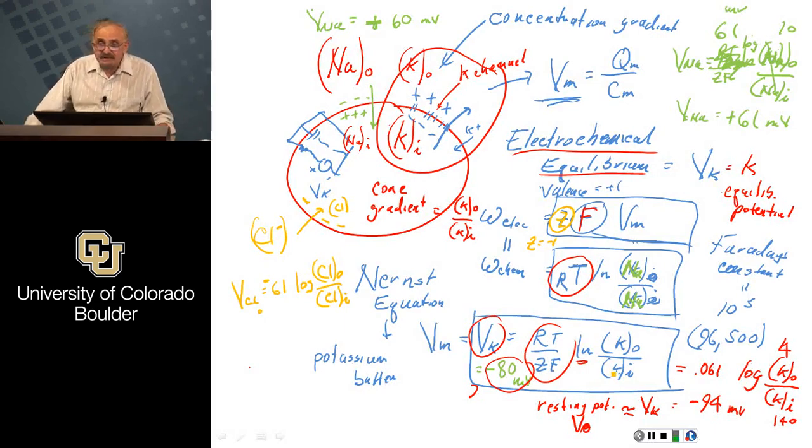For a negative ion, the valence Z is equal to minus 1. So for chloride, this number becomes minus 61. You've got to take into account two things which tend to oppose each other: the direction of the concentration gradient and the polarity of the ion. There are other ions that can cross the membrane like calcium and magnesium, but these three guys—chloride, sodium, potassium, and particularly sodium and potassium—are the big guys on the block in determining membrane potential.